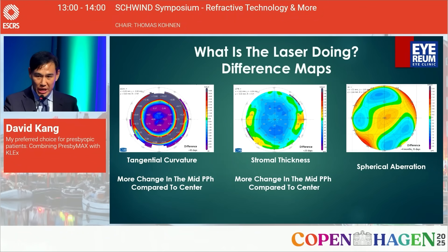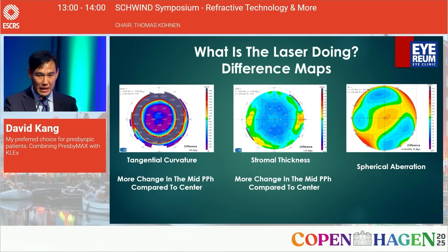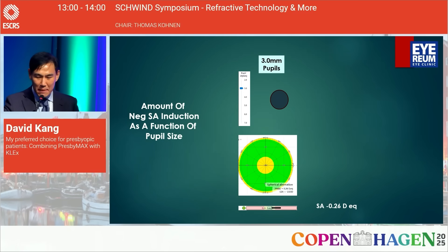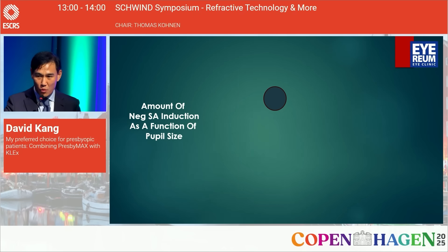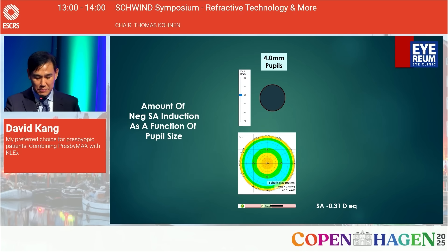Difference maps show more change in the mid-periphery on tangential curvature maps as well as stromal thickness maps — from a myopic eye, you are ablating more in the mid-periphery than the very center. The amount of negative spherical aberration induction is critically pupil-dependent. At a three-millimeter pupil, the induced negative spherical aberration in a post-op eye is minus one quarter; at four millimeters it increases to minus one third.